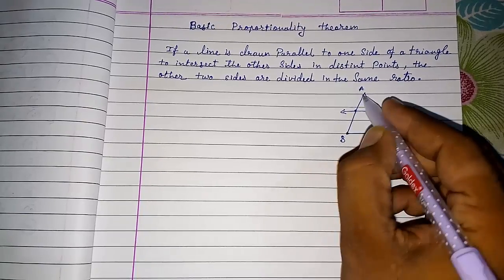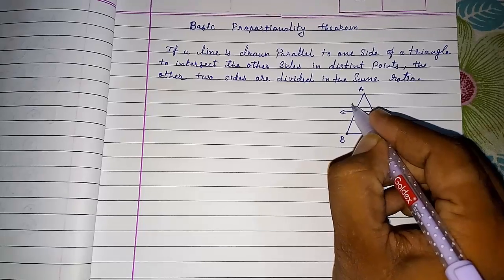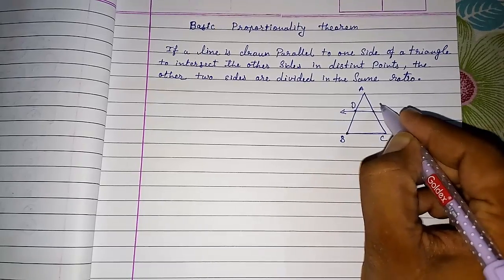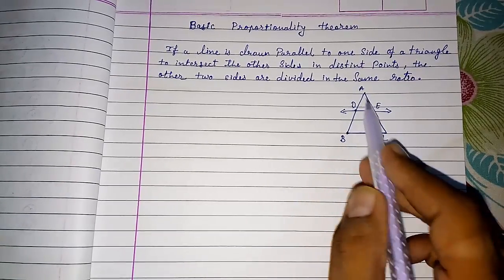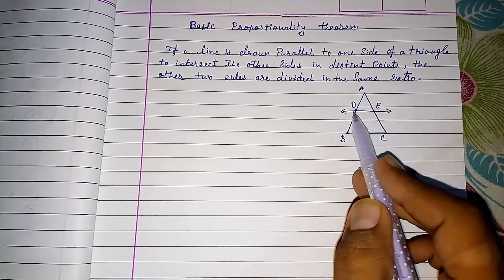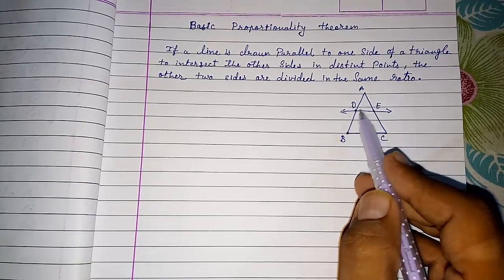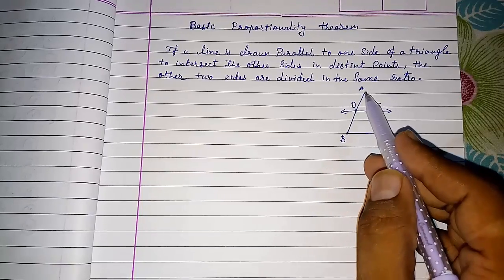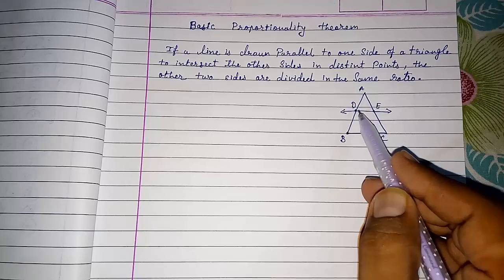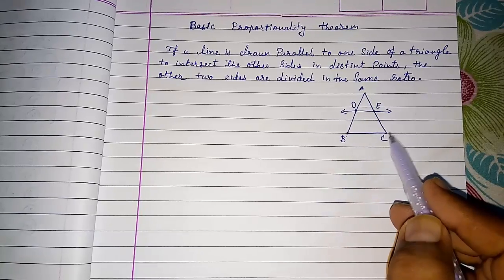One on AB, give that point name D and give that point name E. We can see triangle ABC and line parallel to one side, and we have to prove that this line divides the intersecting sides in the same ratio. Means we have to prove AD upon DB is equal to AE upon EC.